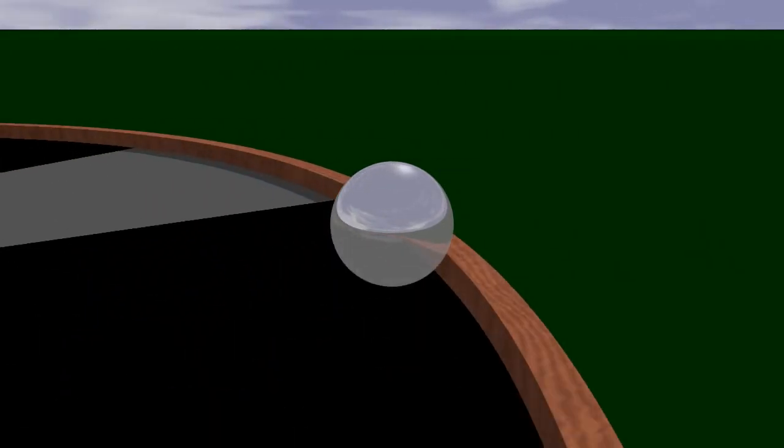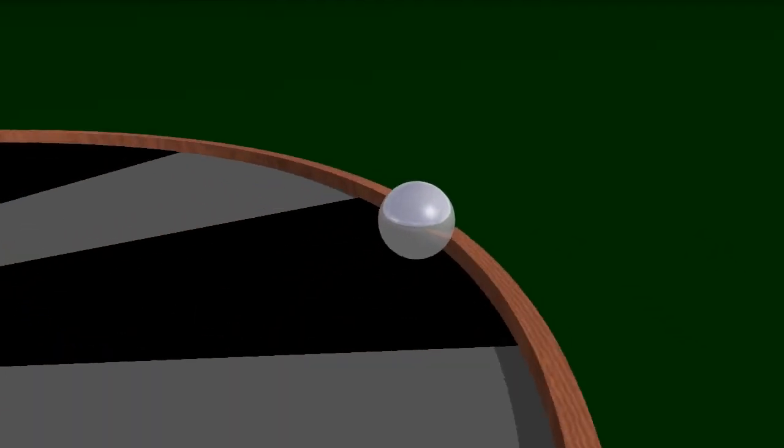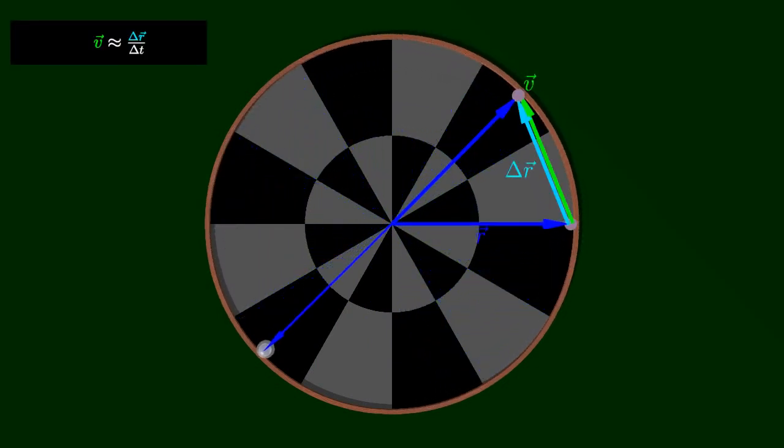In uniform circular motion, an object travels around a circle at a constant speed. The velocity of the object is the rate of change of position with respect to time. This velocity can be estimated by examining the change in position over a short time interval.